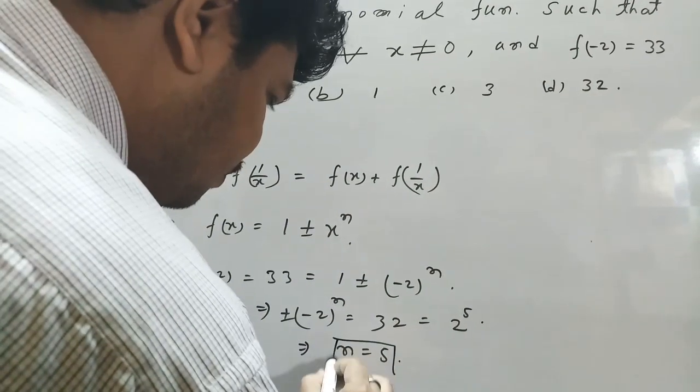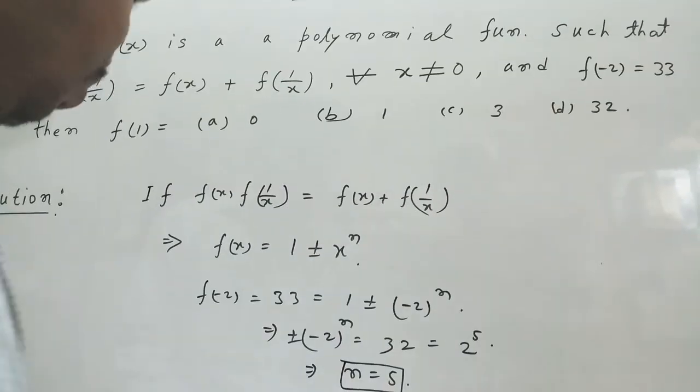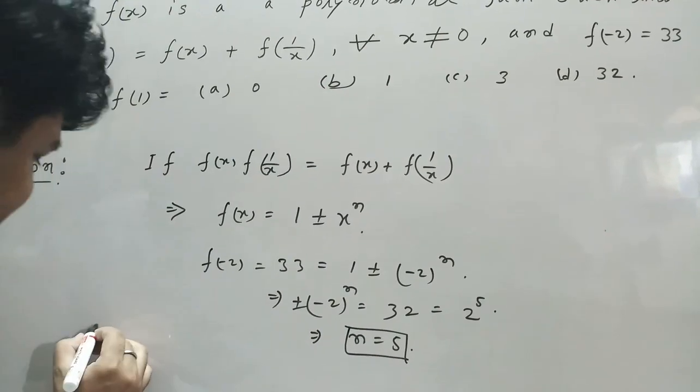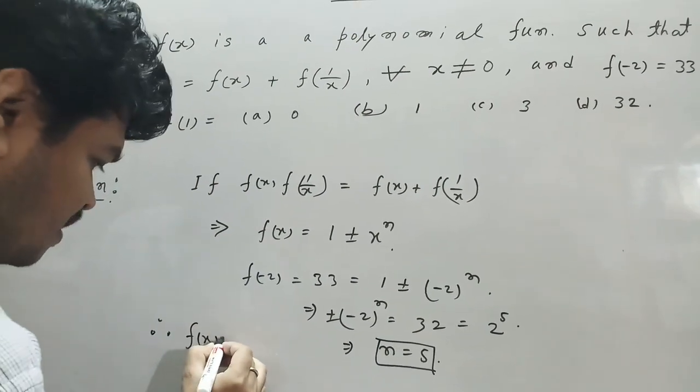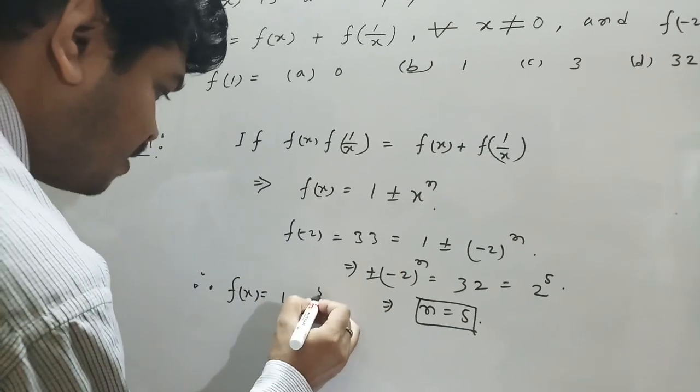From this we can say value of n must be 5. Then this relation will be satisfied. Therefore, n equal to 5. So value of f(x) is 1 minus x power 5.